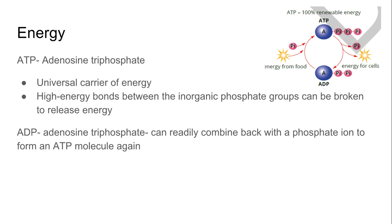The energy comes from high-energy bonds between the inorganic phosphate groups, and when these are broken down, they release energy. The components themselves can then readily combine back together to form an ATP molecule again, and here we can see how this cycle from ATP to ADP is regenerated.